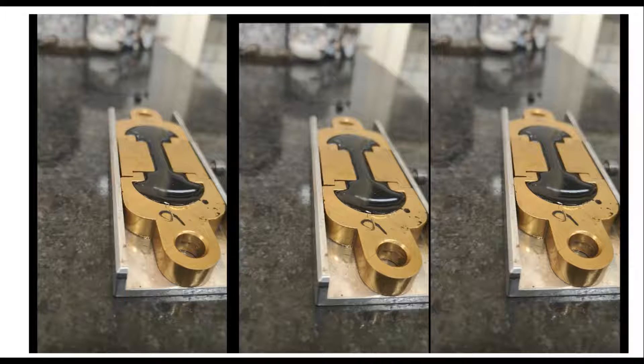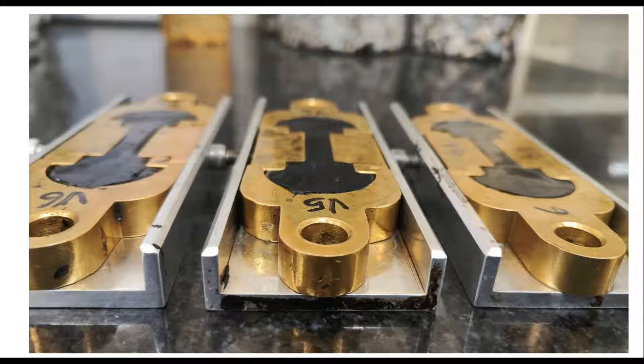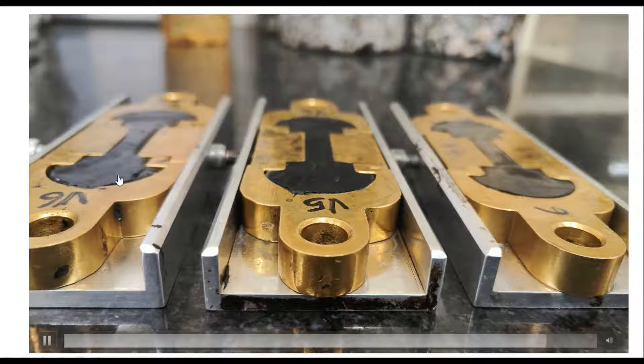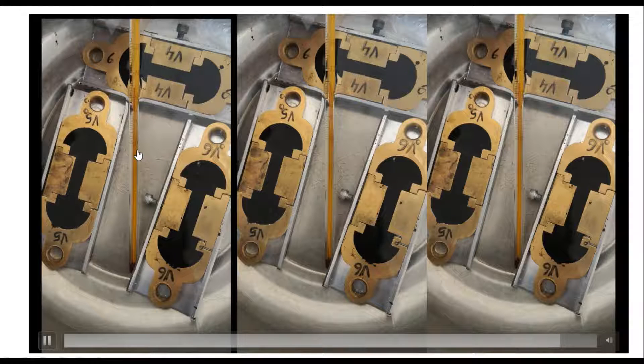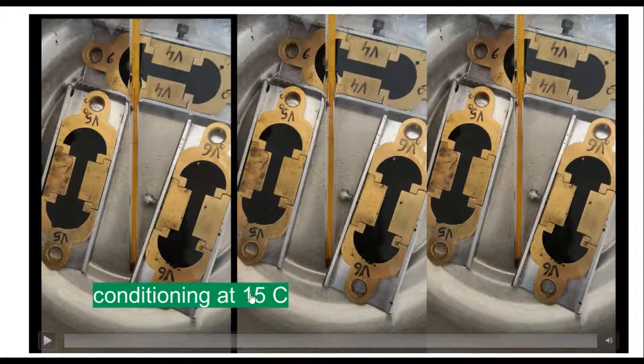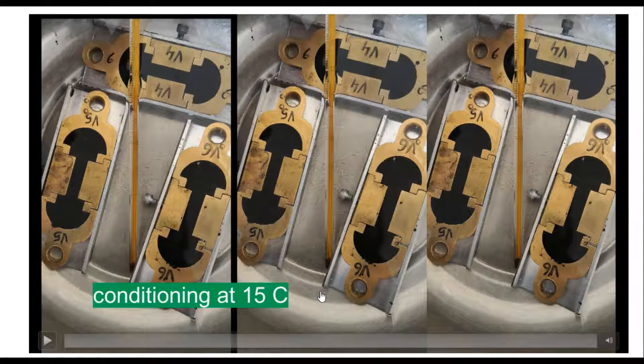Then cure it at room temperature for 30 to 40 minutes. After that, remove the extra material from the surface using a hot knife and then condition it at 15 degrees Celsius in a water bath for 60 minutes.